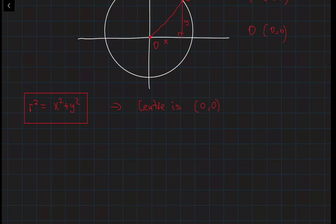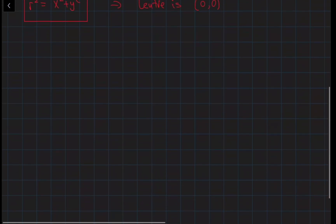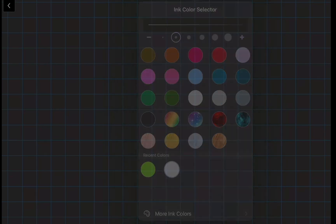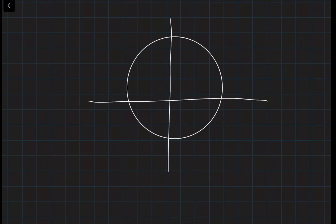This is because the legs of the triangle are just x minus 0 and y minus 0, which simplifies to x and y. But let's say the origin is not at (0, 0). Let's have a different circle and say the center is at (x1, y1) — or, for the sake of generalization, let's call it x1 and y1.